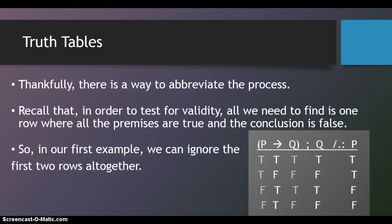Thankfully, there's a way to abbreviate the process. Recall that, in order to test for validity, all we need to find is one row where all the premises are true and the conclusion is false.